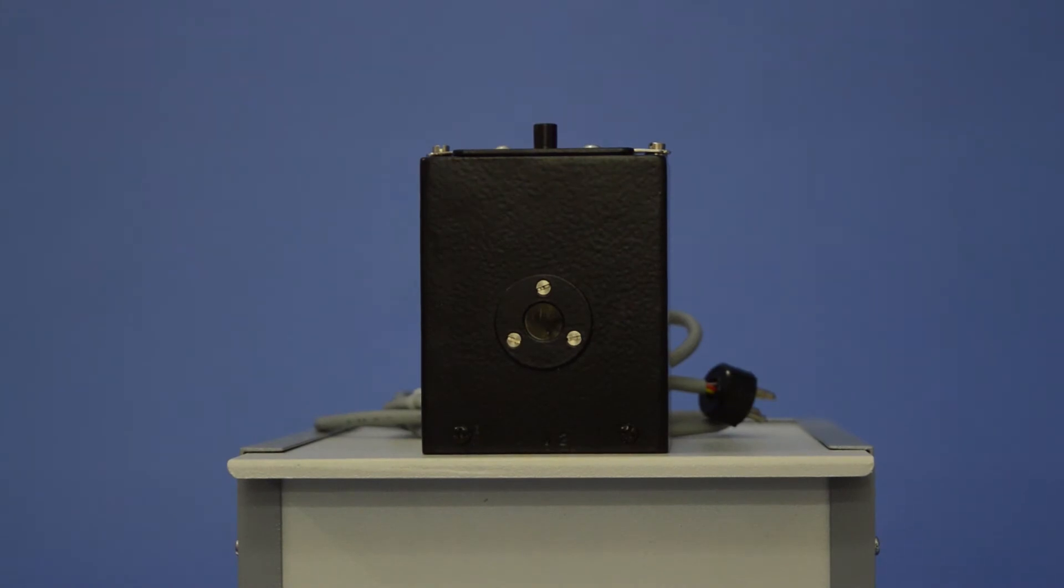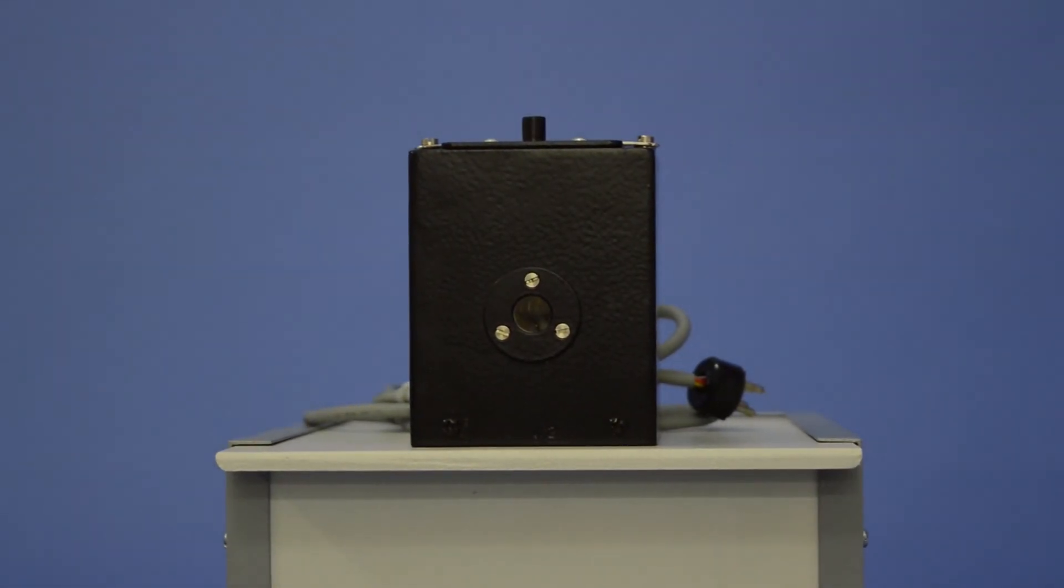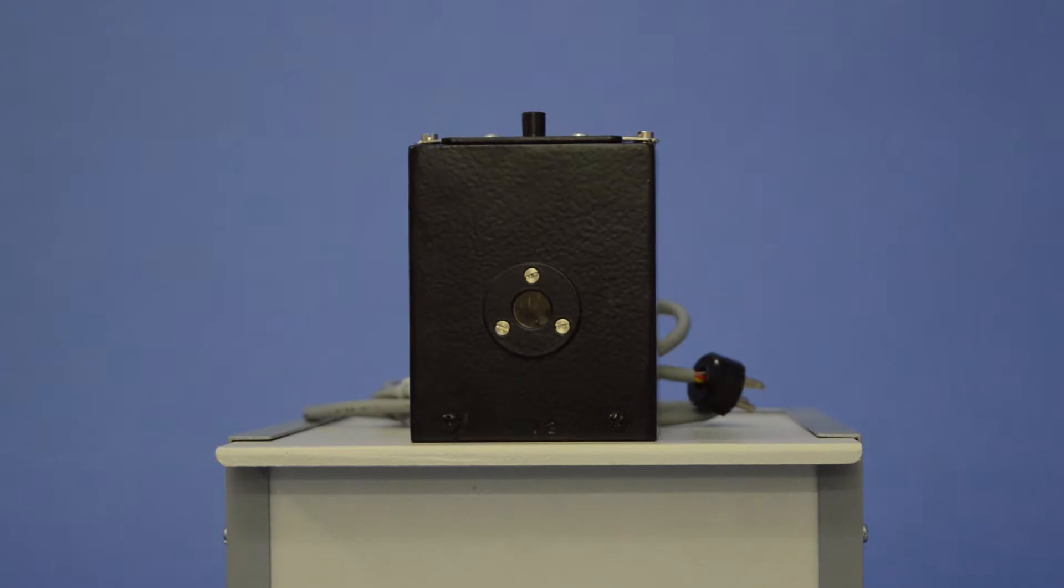Small oven with RTD sensor and crystal holder. The maximum temperature range of this oven is 423 Kelvin or 150 degree centigrade. This is a black box.